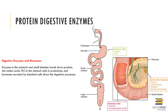Each enzyme attacks peptide bonds linking specific amino acids and ignores others. Together, they break down proteins into mixtures of dipeptides, tripeptides, and amino acids. The brush border cells secrete enzymes that break down the remaining protein chains into individual amino acids. The amino acids are absorbed into the brush border cells by facilitated diffusion and co-transport mechanisms. After diffusing into the basal surface of the cell, the amino acids are moved into the hepatic portal vein and transported to the liver for processing.